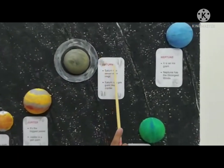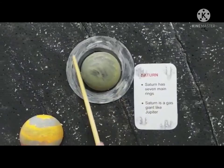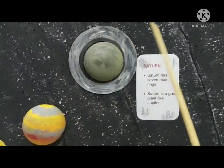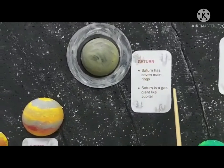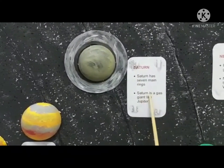Saturn. Saturn has seven main rings. See, Saturn has rings here. The rings are made of rock, ice and dust. Saturn is a gas giant like Jupiter.